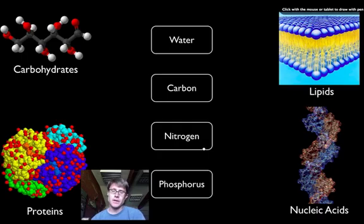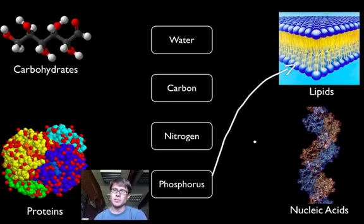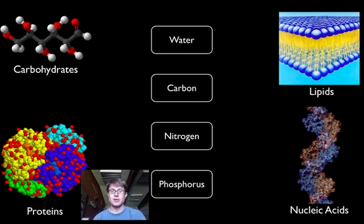And then finally, phosphorus. Well, where is phosphorus found? Phosphorus is going to be found in the heads of these phospholipids that make up the membrane. And then phosphates are also going to be found on the side chains of DNA, or it's going to be found in the backbone of DNA and RNA. And so if we don't have carbon, nitrogen, phosphorus, if we don't have water, then we don't have life. And so we require this matter from our environment.